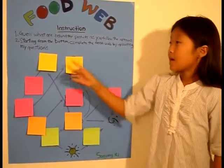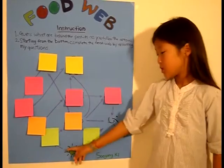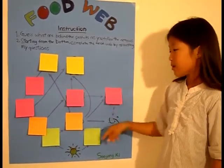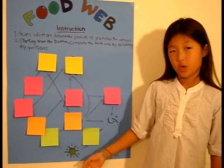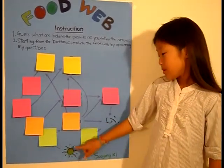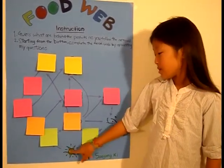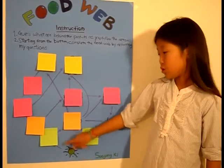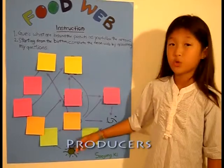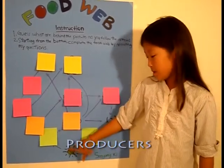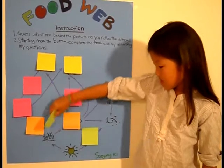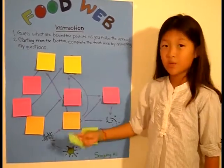As you see on this poster, there's sun and there's bacteria. The other pictures are all covered behind the post-its. Sun gives energy to living things called producers. Grass gets energy from the sun.